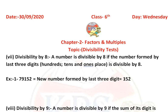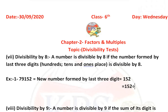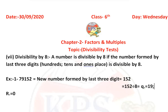Now we divide 152 by 8. When we divide 152 by 8: 8 goes into 15 once with remainder 7; bring down 2 to get 72; 8 goes into 72 nine times, giving quotient 19 and remainder 0. So we get remainder 0. The last three digits are completely divisible by 8.